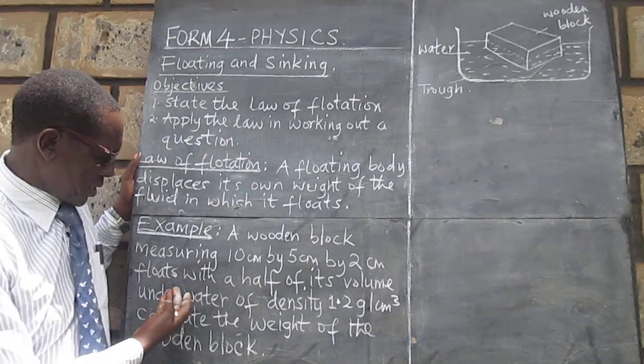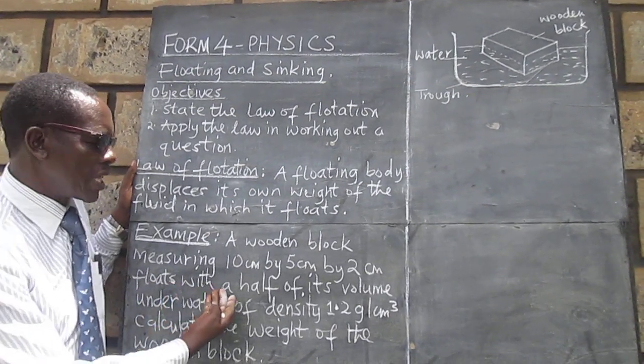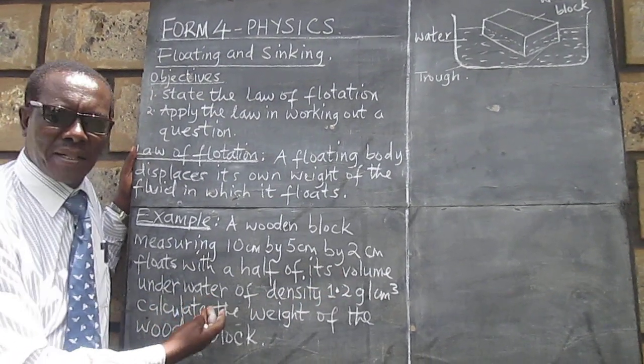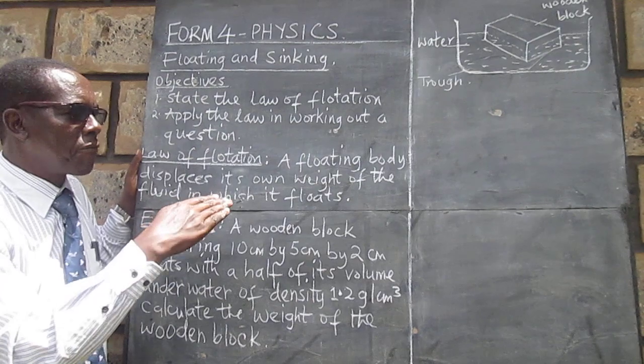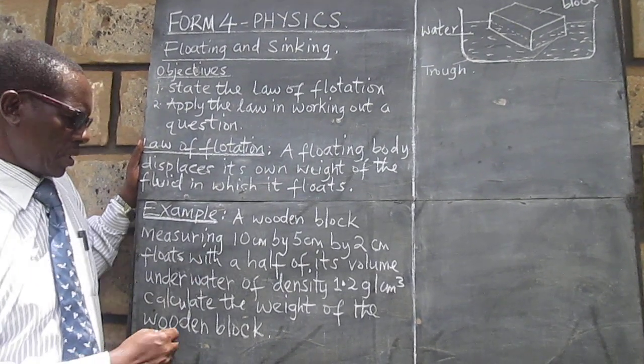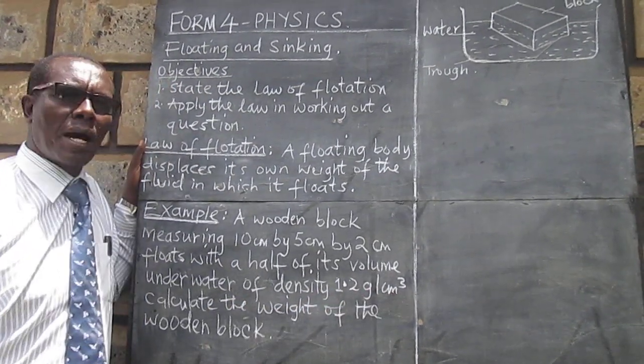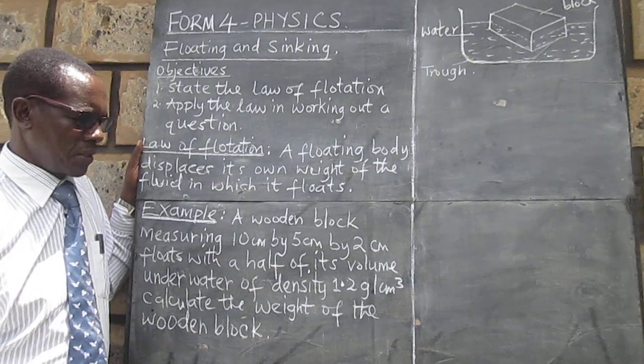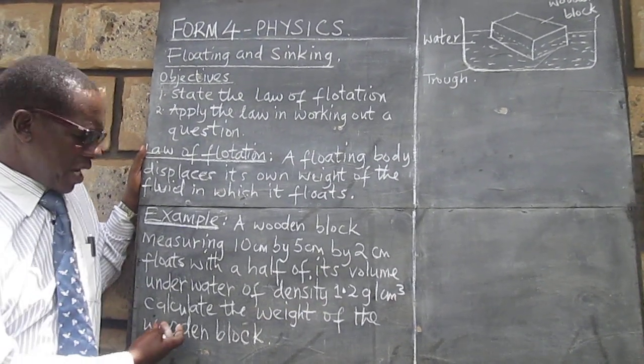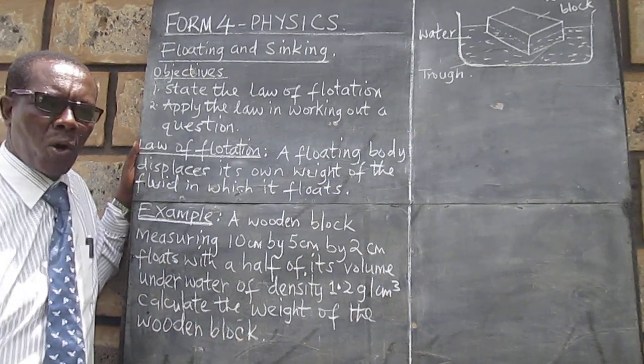And we are told that this wooden block floats with a half of its volume under water. So half of the body is submerged. The water has a density of 1.2 gram per cubic centimeter. Looks like it is sea water. And we are required to calculate the weight of the wooden block.